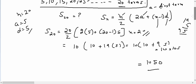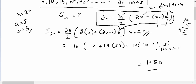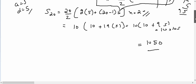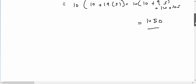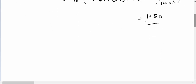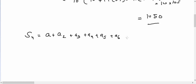Now a question can come up in your mind: how did this formula actually come into existence? This formula can be derived easily. The sum of n terms of an AP is basically the sum of the first term, second term, third term, fourth term, fifth term, sixth term, and so on up to n terms.